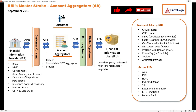Whoever possesses any financial information regarding the customer can register themselves as FIPs. At this point of time there are multiple banks, different NBFCs, government agencies, asset management companies, depositories or depository participants, insurance companies or insurance repositories, pension funds, and recently GSTN — specifically for SME credit purposes — to provide GSTR-1 and GSTR-3B forms and invoices. All these are different FIPs.